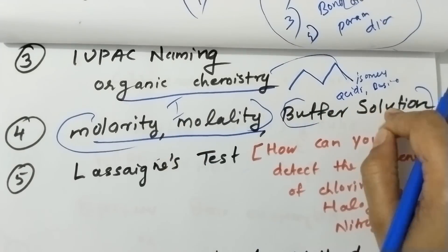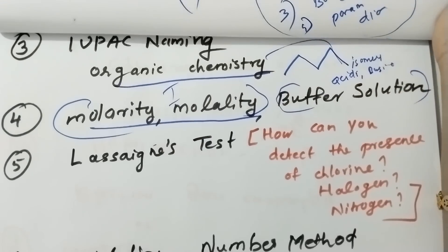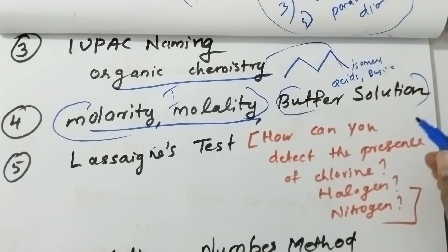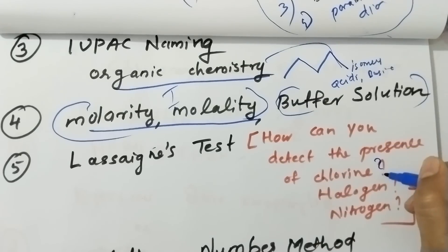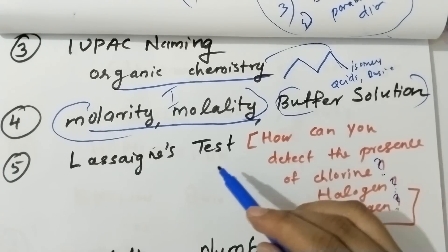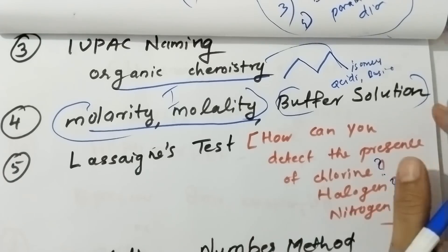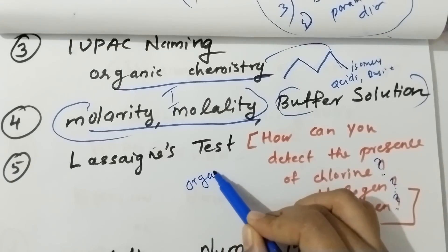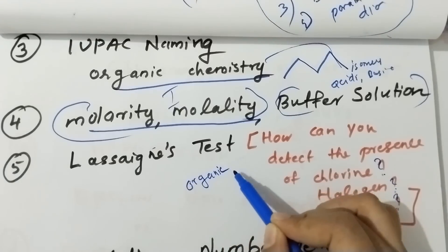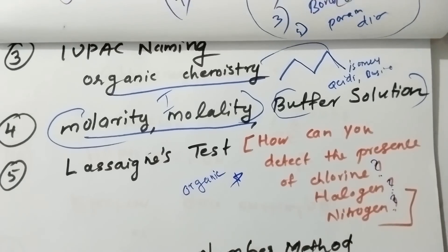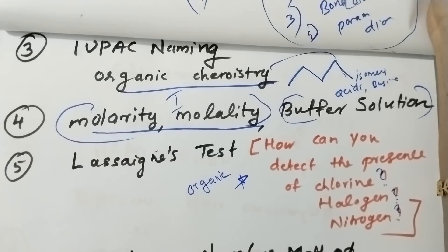This is the Lassaigne test. What is the Lassaigne test? How can you detect the presence of chlorine? How can you detect the presence of halogen and nitrogen using the Lassaigne test? This is an important section of organic chemistry — very important.